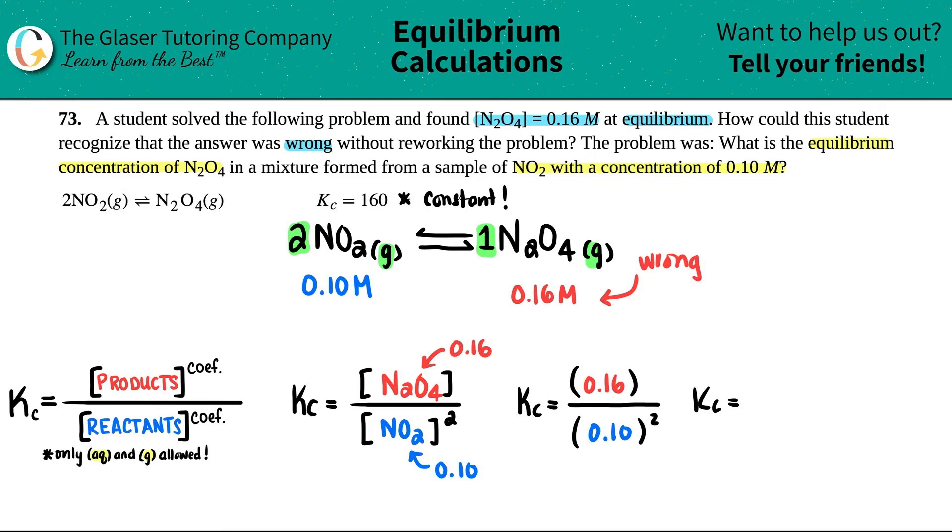But it's basically used as a marker to see if you did the question right. So let's see, I'm going to now just check my answer. I'm going to do the 0.1 squared, and then I'm going to do 0.16 divided by that answer, 0.01, and I get a 16.